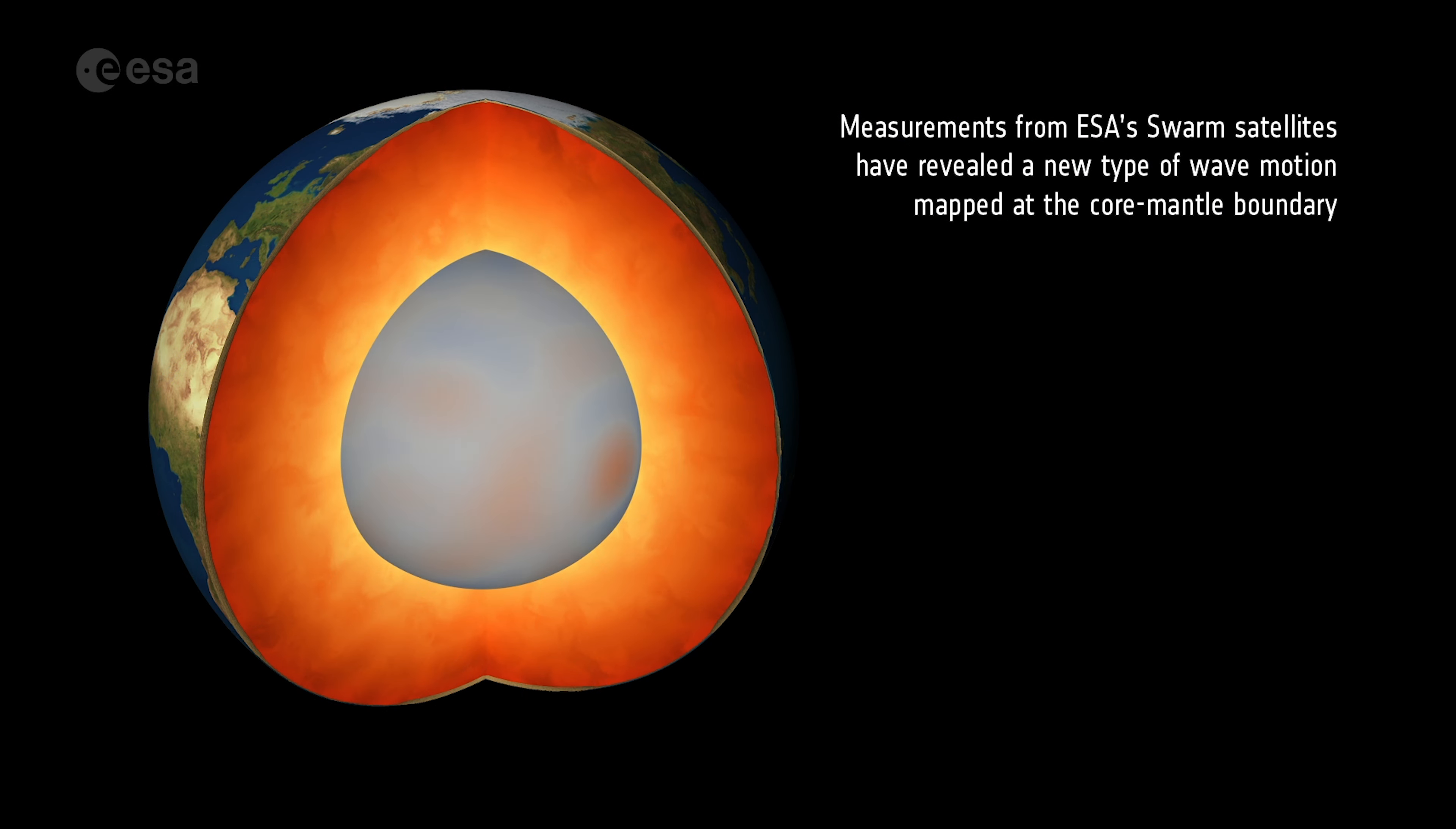The magnetic field is generated by swirling liquid iron in the outer core, which acts like a giant dynamo.